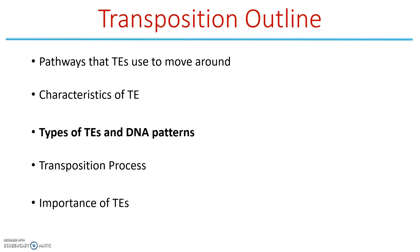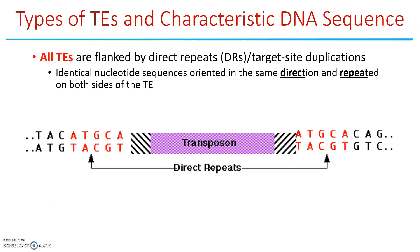Every transposable element — regardless of whether it's retro or not — must have direct repeats, also called target site duplications. These are identical nucleotide sequences on the ends that are in the same direction and repeated, for example A-T-G-C-A repeated on both sides. All transposable elements have these direct repeats flanking them.